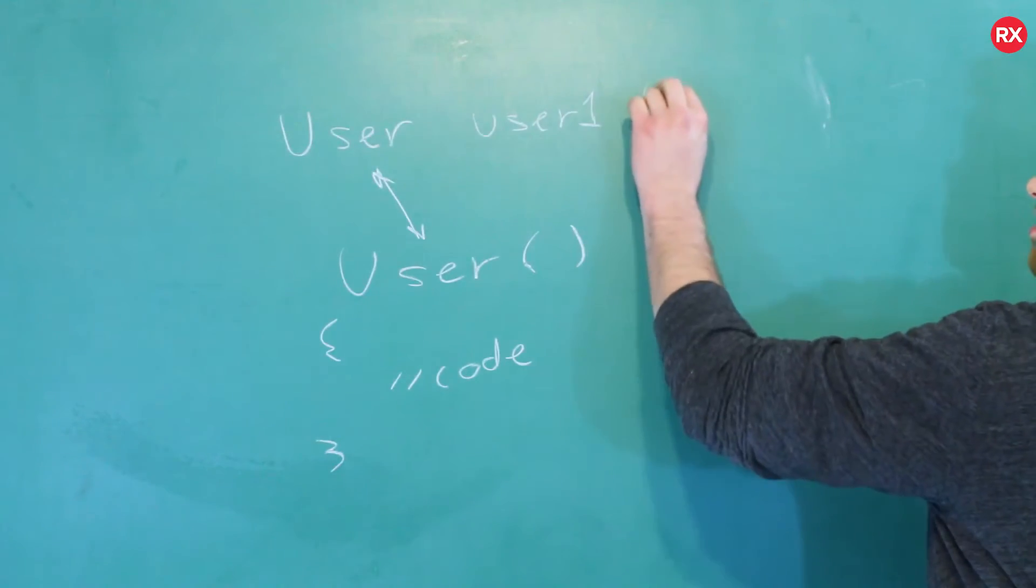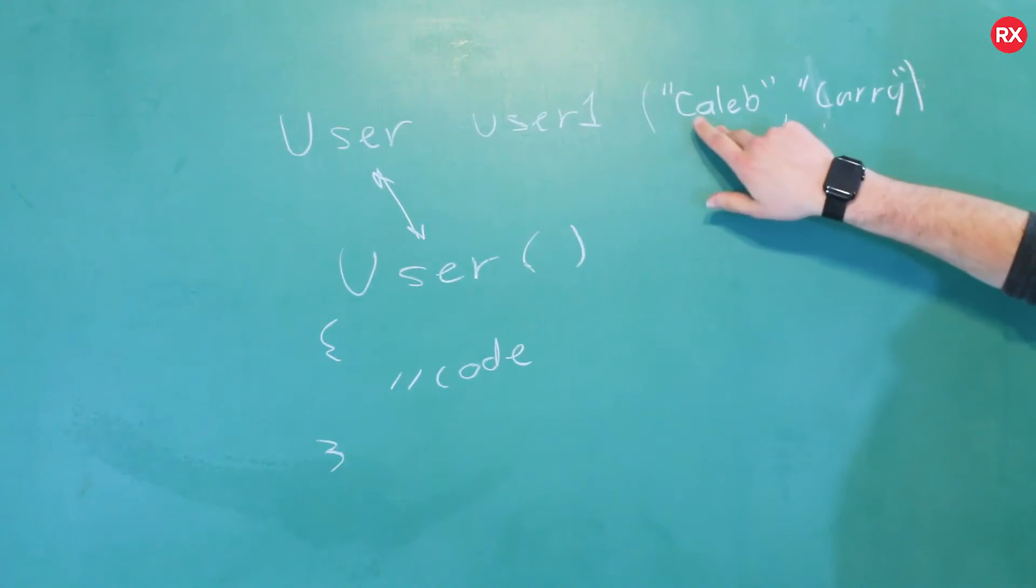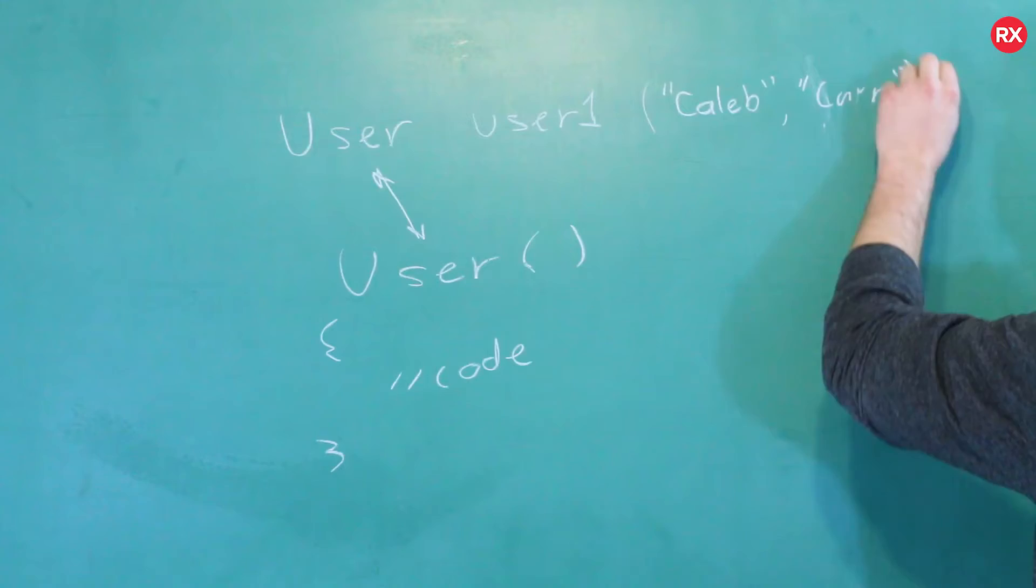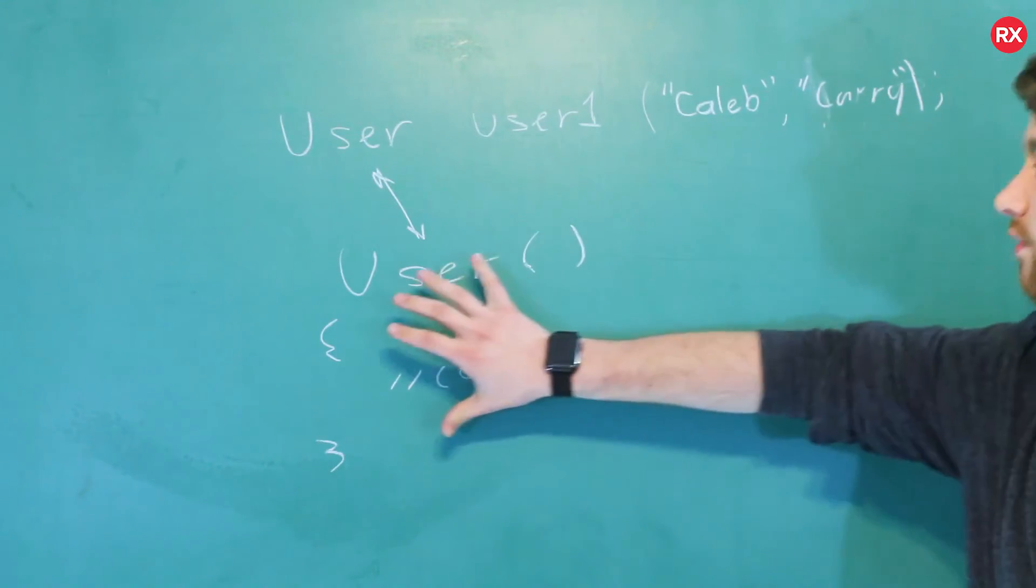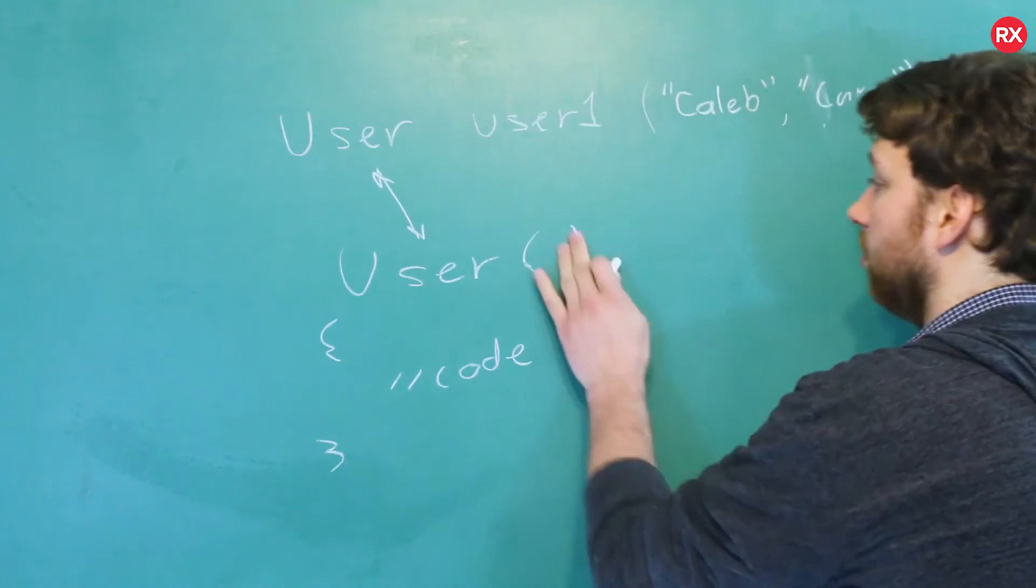For example, we can pass in the person's name here, and you can see in this situation, we have two arguments. Caleb, the first name, and Curry, the last name. In this situation, the default constructor would not be hit. A different constructor would be hit, one that would look like this.